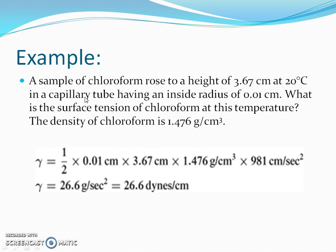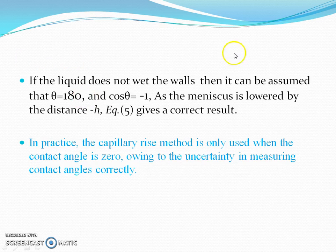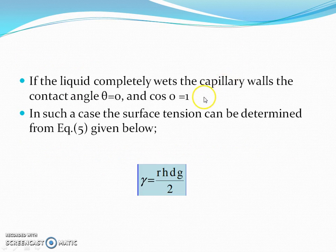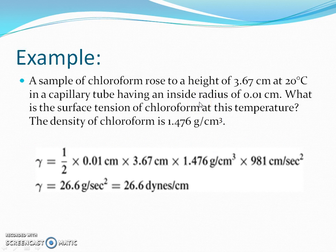A sample of chloroform rose to the height of 3.67 cm at 20 degrees Celsius in a capillary tube having an inside radius of 0.01 cm. What is the surface tension of chloroform at this temperature?